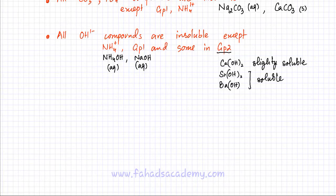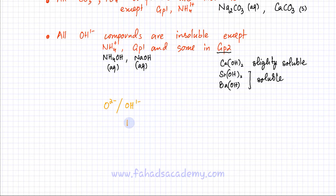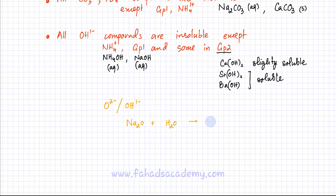A few points about oxides: oxides, which contain O²⁻, are related to hydroxides and can be used interchangeably. If you dissolve sodium oxide, Na₂O, in water, the oxide ion gets converted into a hydroxide ion, becoming 2 NaOH. This applies to any oxide that dissolves in water.